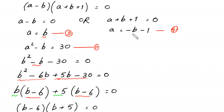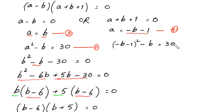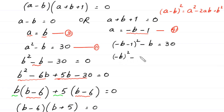From equation 4, we substitute a equals negative b minus 1 into equation 1. So (negative b minus 1) squared minus b equals 30. Using the identity (a minus b)² equals a² minus 2ab plus b², we expand (negative b minus 1)² to get b² minus 2(negative b)(1) plus 1, which is b² plus 2b plus 1.